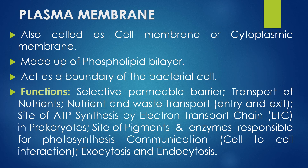The second part is the plasma membrane, also called the cell membrane or cytoplasmic membrane. It is made up of a phospholipid bilayer and acts as a mechanical boundary of the bacterial cell. Its functions include acting as a selectively permeable barrier and being involved in the transport of nutrients and waste. It is also the site of ATP synthesis in prokaryotes, because the electron transport chain — normally occurring in mitochondria — takes place here since prokaryotes lack mitochondria. It is also the site of pigments and enzymes responsible for photosynthesis, and helps in cell-to-cell communication.